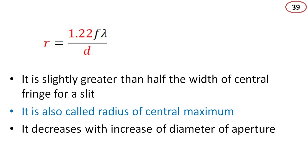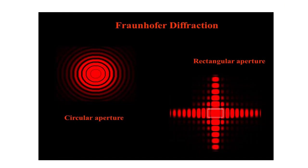The radius decreases with increase of diameter of aperture — as D increases, r decreases. The right side image shows Fraunhofer diffraction using a rectangular aperture, while using a circular aperture gives the ring-type Airy pattern.